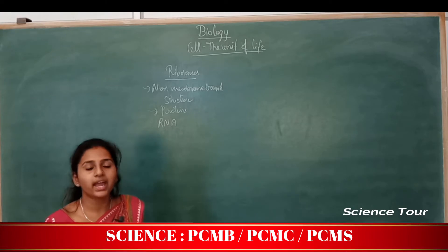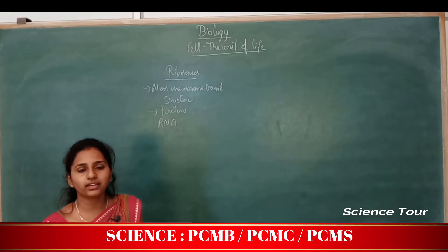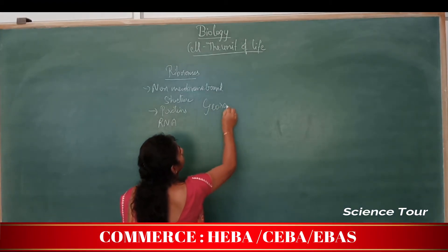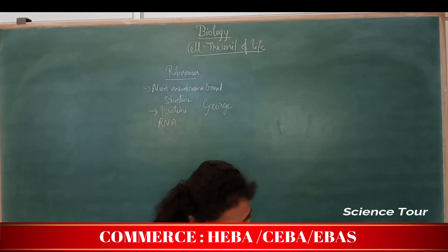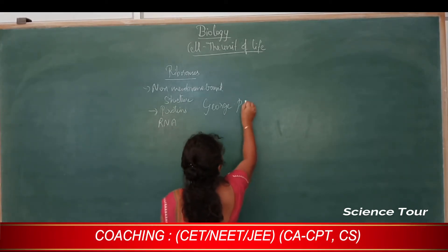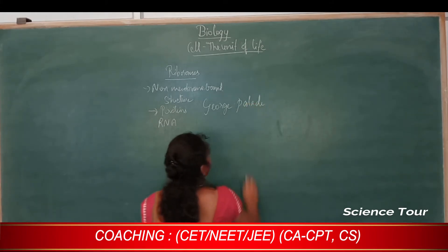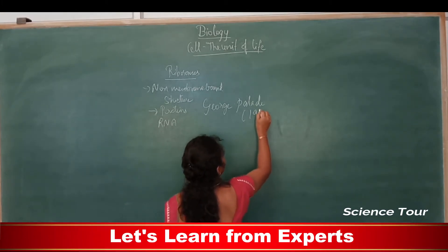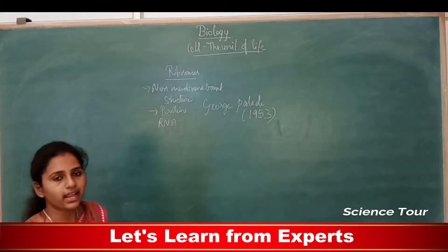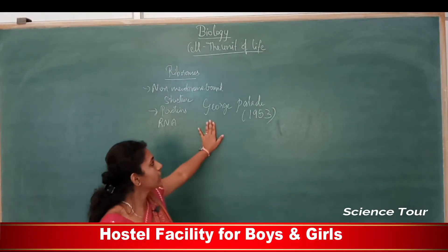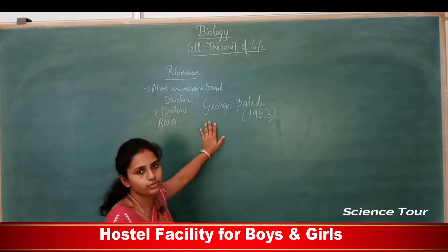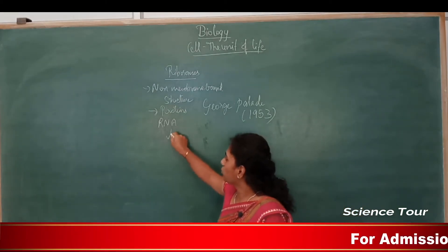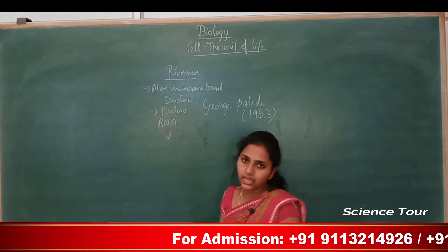Ribosomes were first observed under the electron microscope by George Palade in 1953. They are chemically made up of ribonucleic acid (RNA) and proteins.